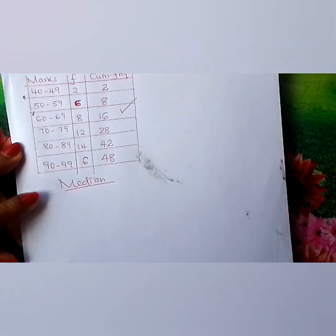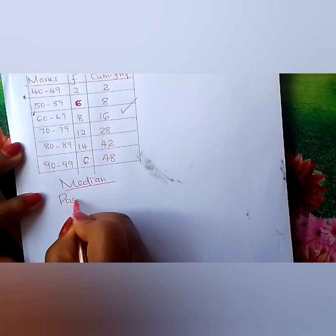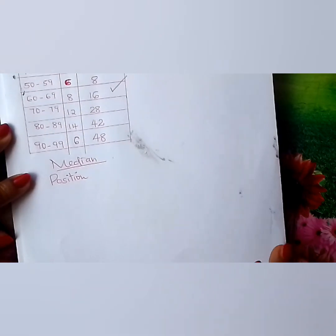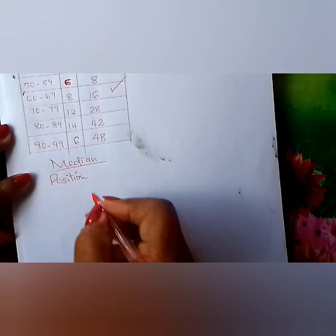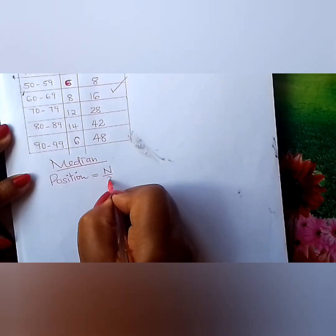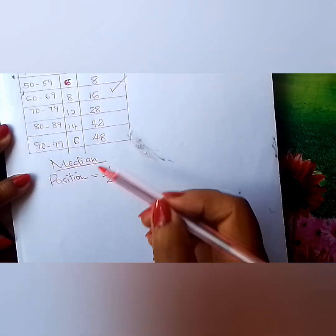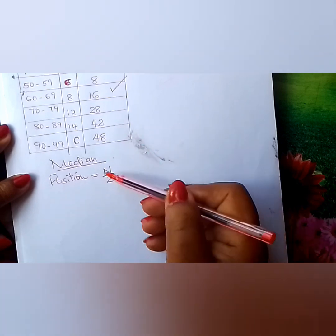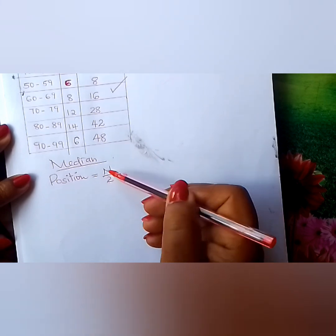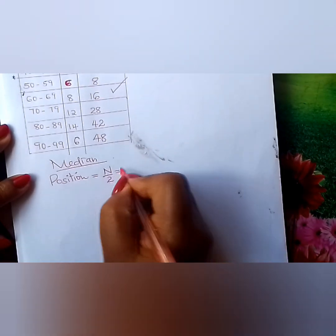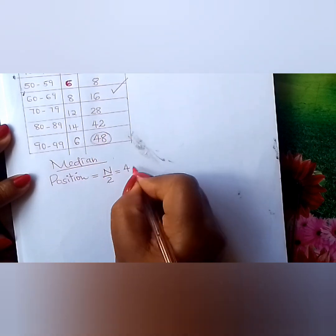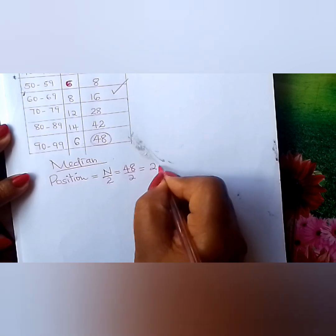The first thing you do is get the position of the median. The median lies at the middle of the data — halfway through. You use total frequency over 2. Our total frequency is 48, divided by 2 gives us 24.